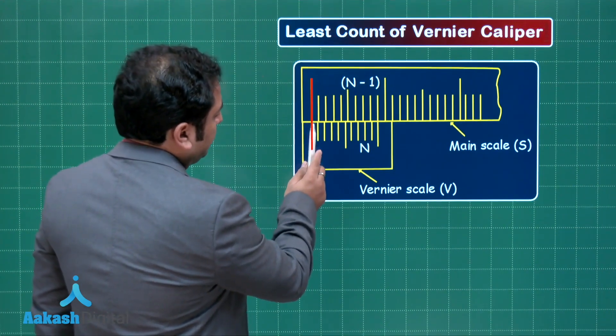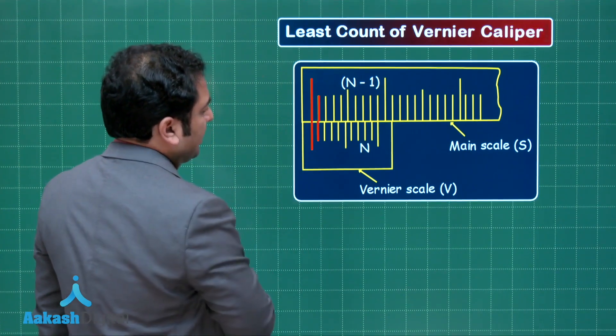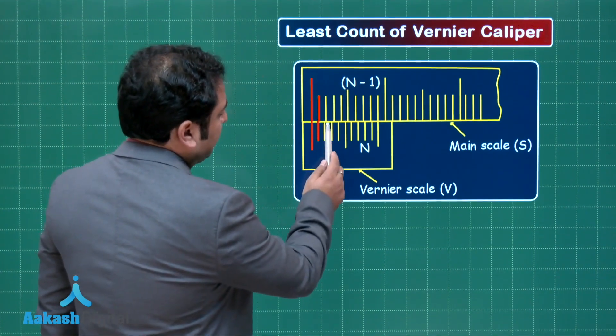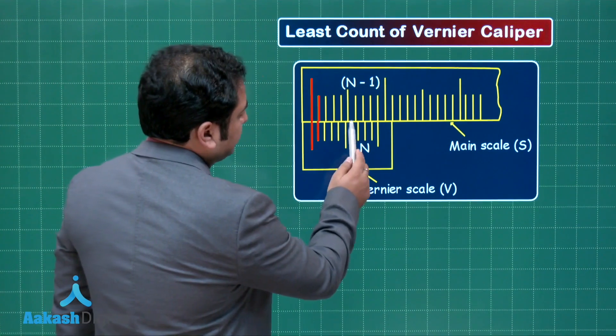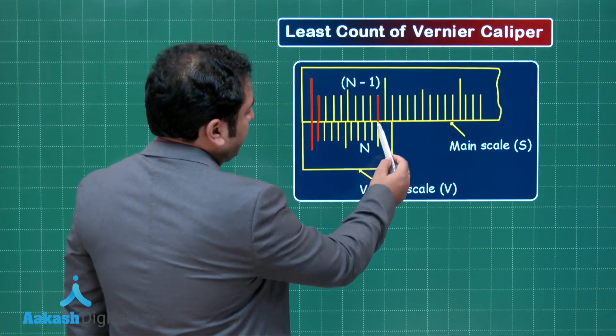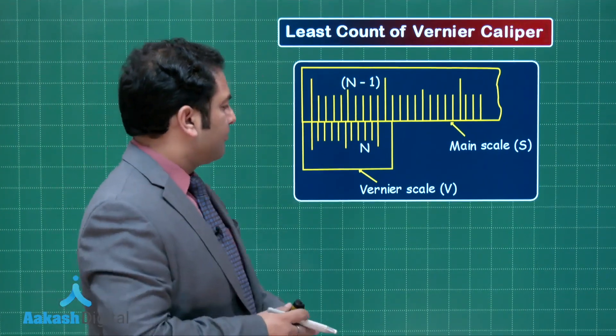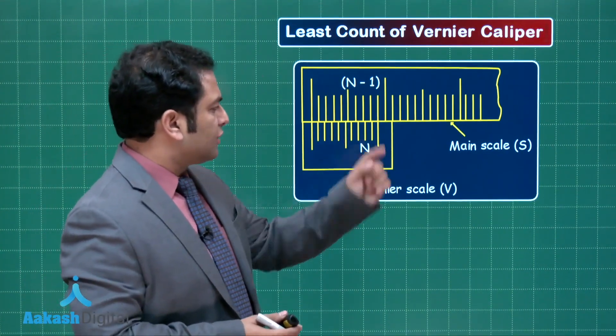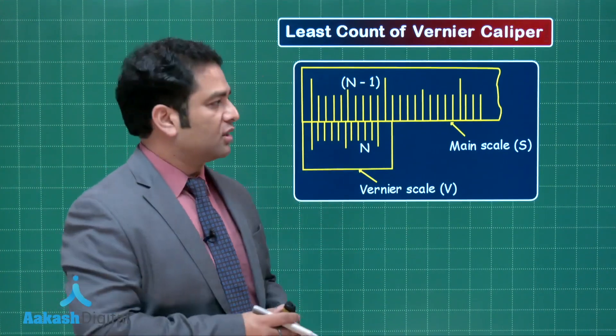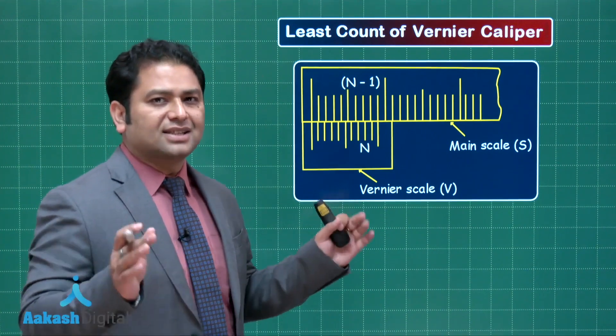As you proceed, the first Vernier is slightly behind the first main and then the lag keeps on increasing gradually. Suddenly you find that at one point the main and the Vernier would again match. By this time the nth division of the Vernier would be matching with n-1 of the main scale. This is a general trend.